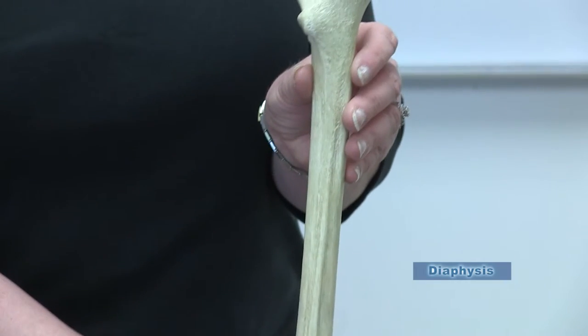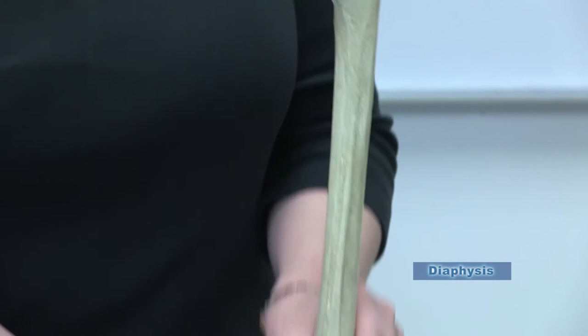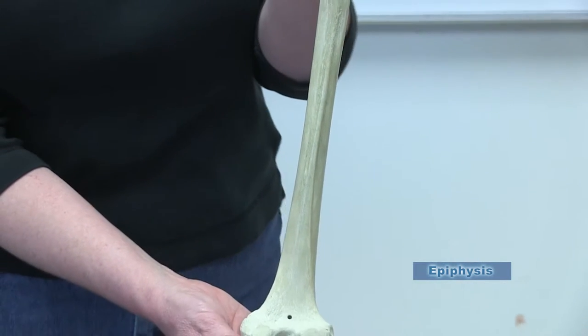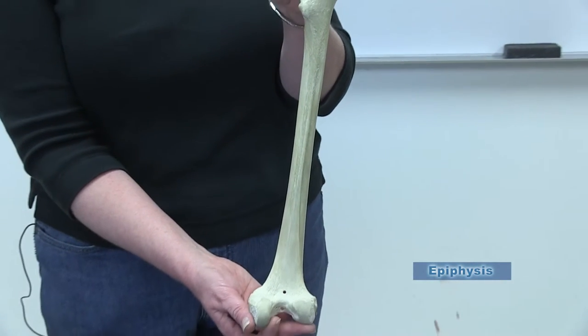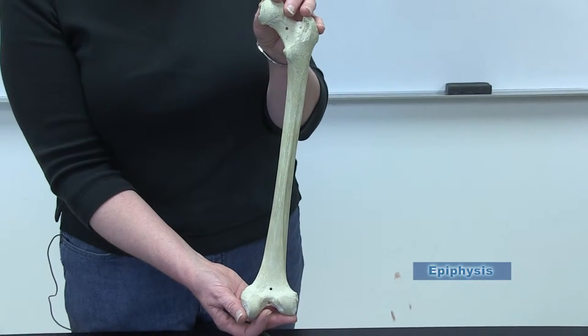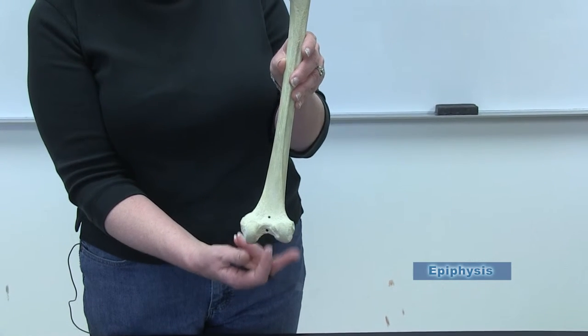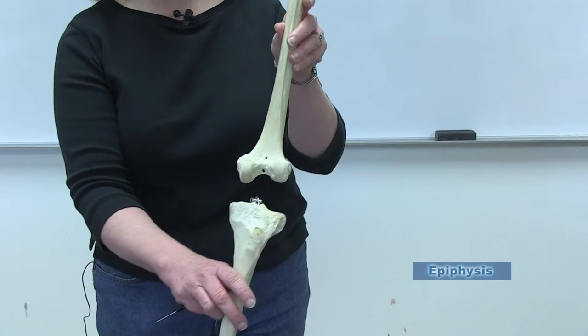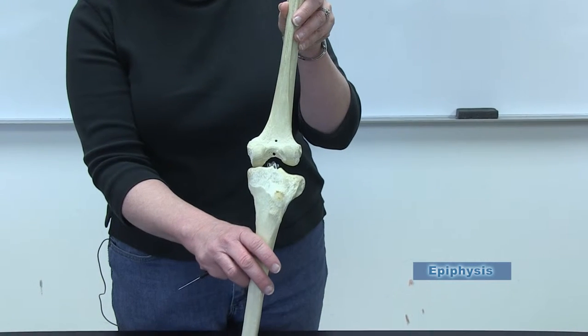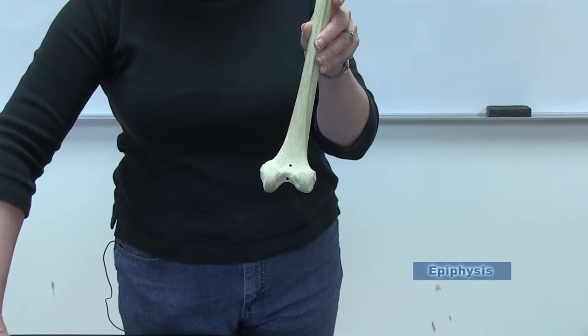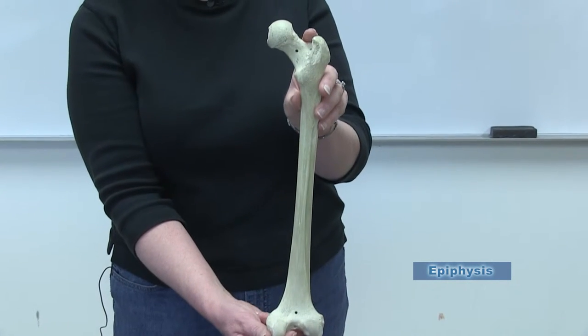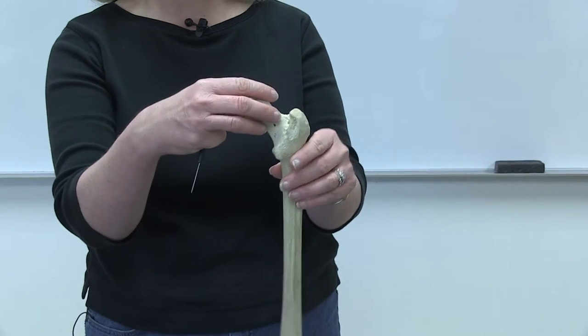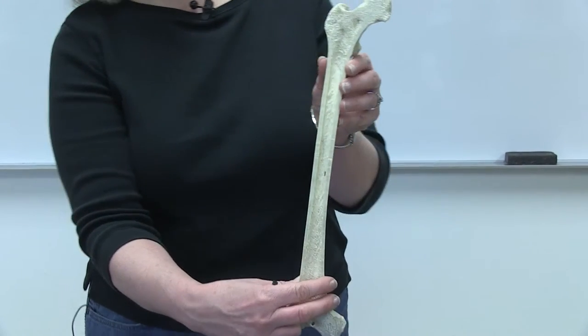So this shaft is called the diaphysis. And then the two end pieces are called the epiphyses. Remember epi, E-P-I, means sitting upon. So these are epiphyses. So you have two of these. You have what would be considered the distal epiphysis and then what would be considered the proximal epiphysis. So you can see how the distal epiphysis would articulate with the following bone after that. This is the distal epiphysis. But the proximal epiphysis would go into the preceding bone. In this case, the hip bone. So make sure you know those parts of the long bone.